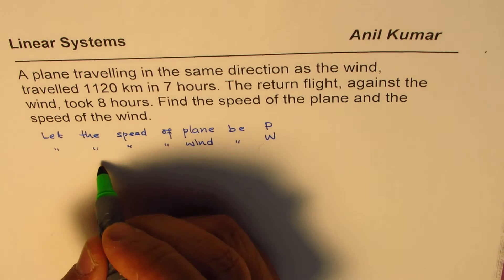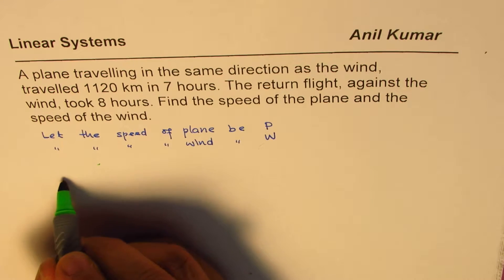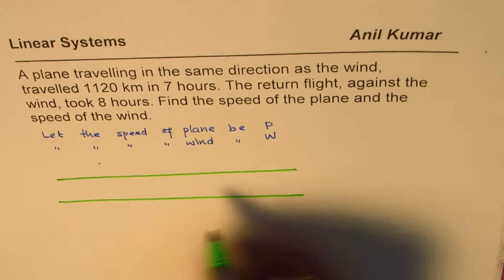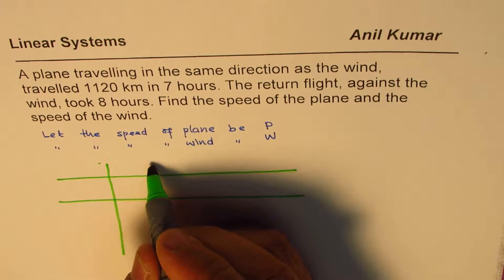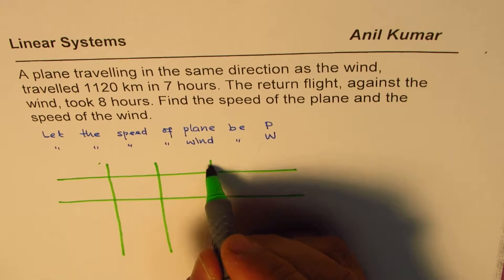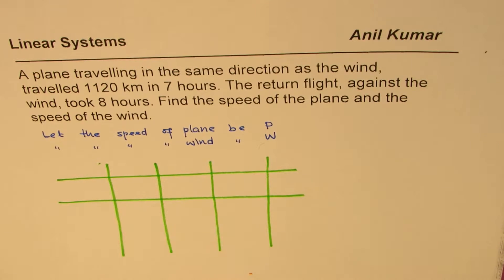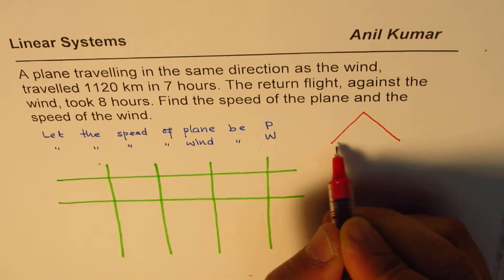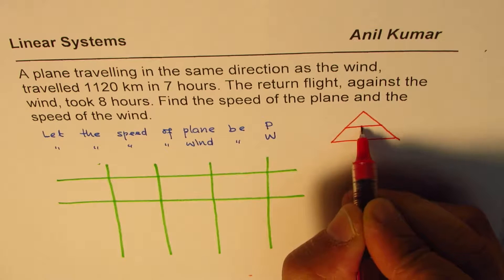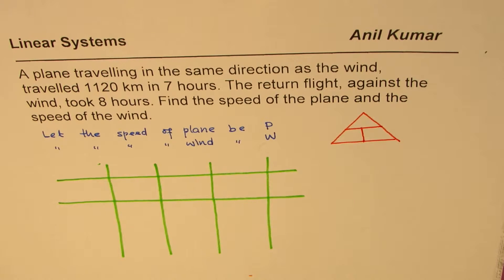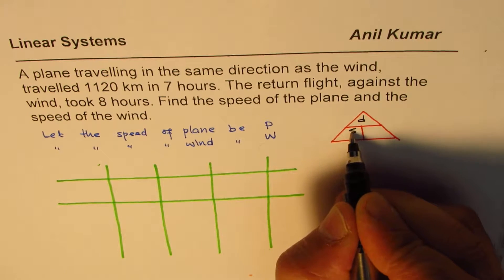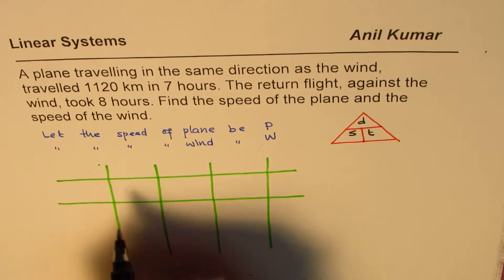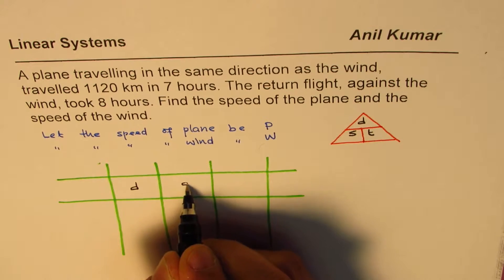Now let us form a strategy to solve such questions. I prefer to make a table of values and from them we'll make equations to solve. So we are talking about three particular variables which are speed, distance, and time. And we also know how they are related. This triangle is very important to understand their relation. Distance is equals to speed into time. So distance is product of speed and time.